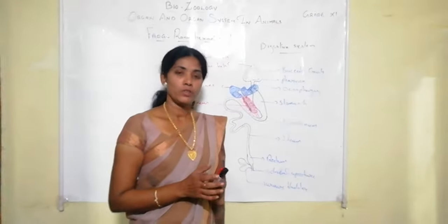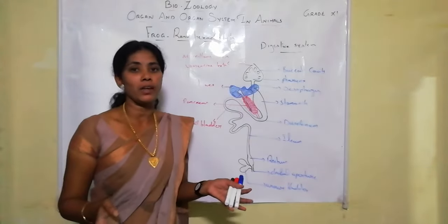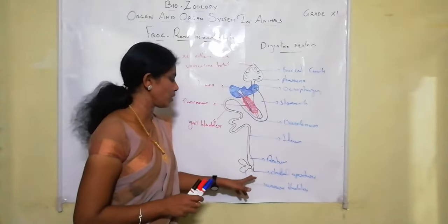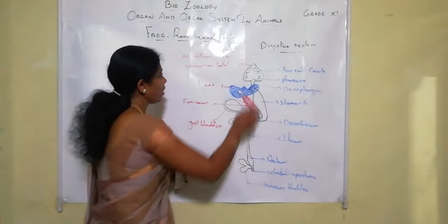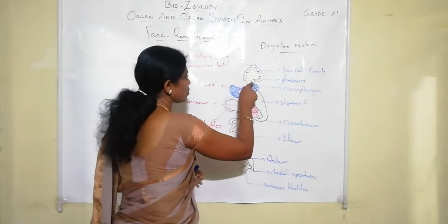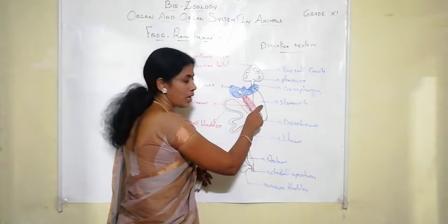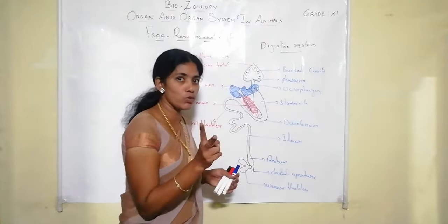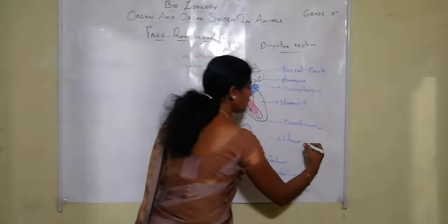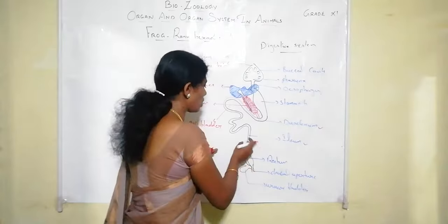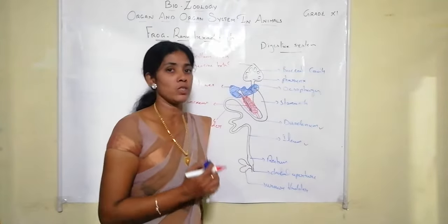Now let us move to the anatomical part. The first system is the digestive system. It consists of a long alimentary canal beginning from the mouth and ending at the cloacal aperture. On the way: mouth opens into the buccal cavity, which leads to the pharynx, then the esophagus, then the stomach, then the intestine — divided into duodenum and ileum — then the rectum, and finally the cloacal aperture.